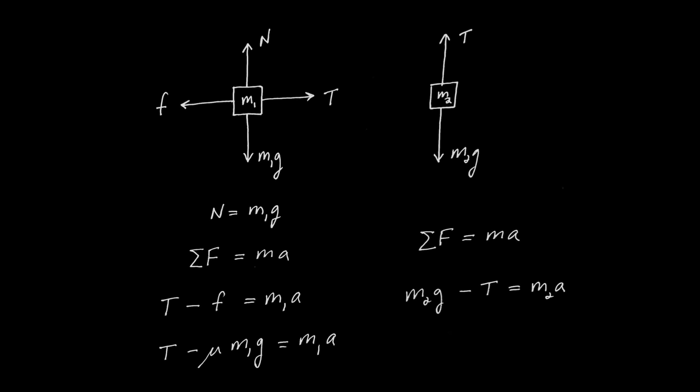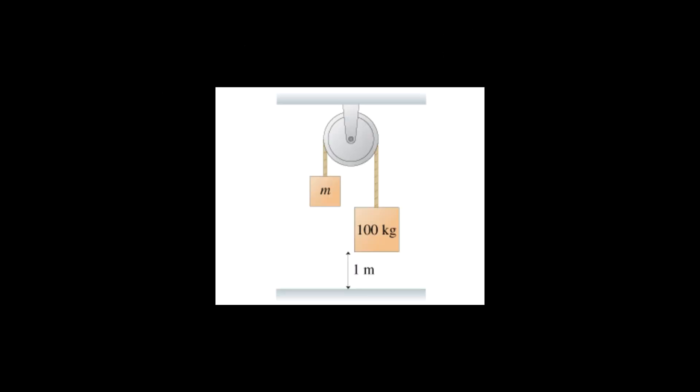I've taken the problem quite a ways. Now let's get the numbers in, plug one equation into the other, and solve for the unknown acceleration and the unknown tension. Here's another excellent example from the homework assignment of two objects interacting — writing Newton's second law for each creates a system of equations to solve simultaneously.